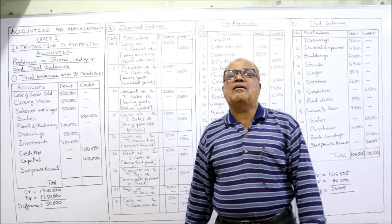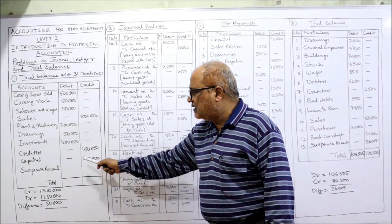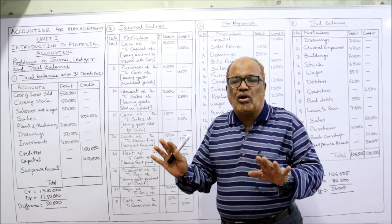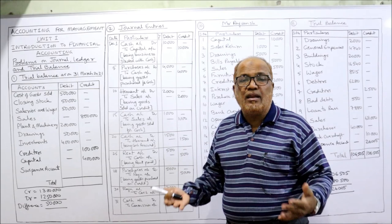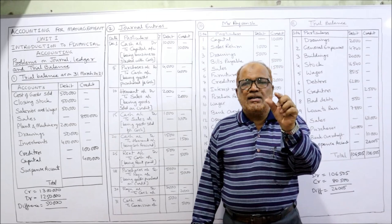Now if there are no errors in the books of account, the total of debit column and credit column will be equal. The total on the credit side is 13 lakh, whereas the debit side total is 12 lakh 50,000. That means the trial balance is not tallied. There may be some errors in the books of accounts, so the difference will be temporarily put in a new account called suspense account.